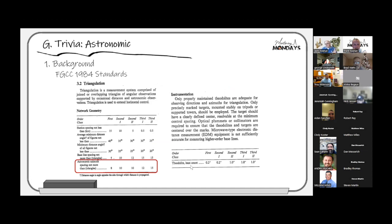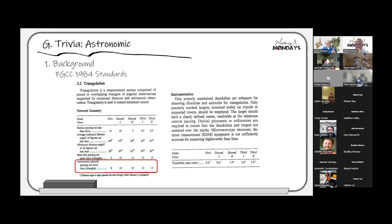The Wild T3 could read directly to 0.2 seconds with estimation to 0.1 seconds, and the Kern DKM3 was the T3's equivalent. These were the workhorses for triangulation networks and star observations. Per FGCC 84 standards, astronomic observations were required not more than every eight triangles and generally required two separate nights. At night the atmosphere was more stable — no solar heating — but you had to wait for it to stabilize before observing.